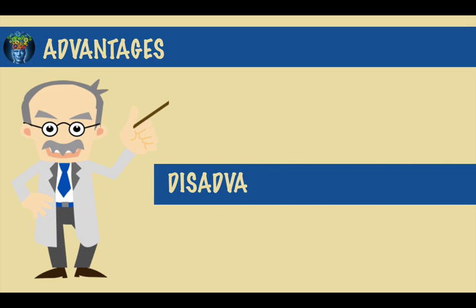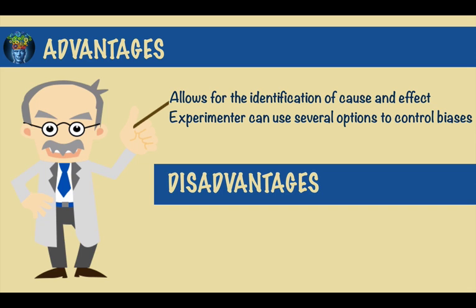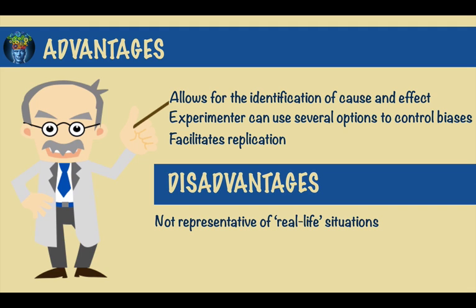Like all types of experiments, there are advantages and disadvantages to using the scientific method. On the one hand, it allows for the identification of cause and effect. Experimenters have several control options and can also facilitate replication, which increases confidence that the independent variable influences the dependent variable.